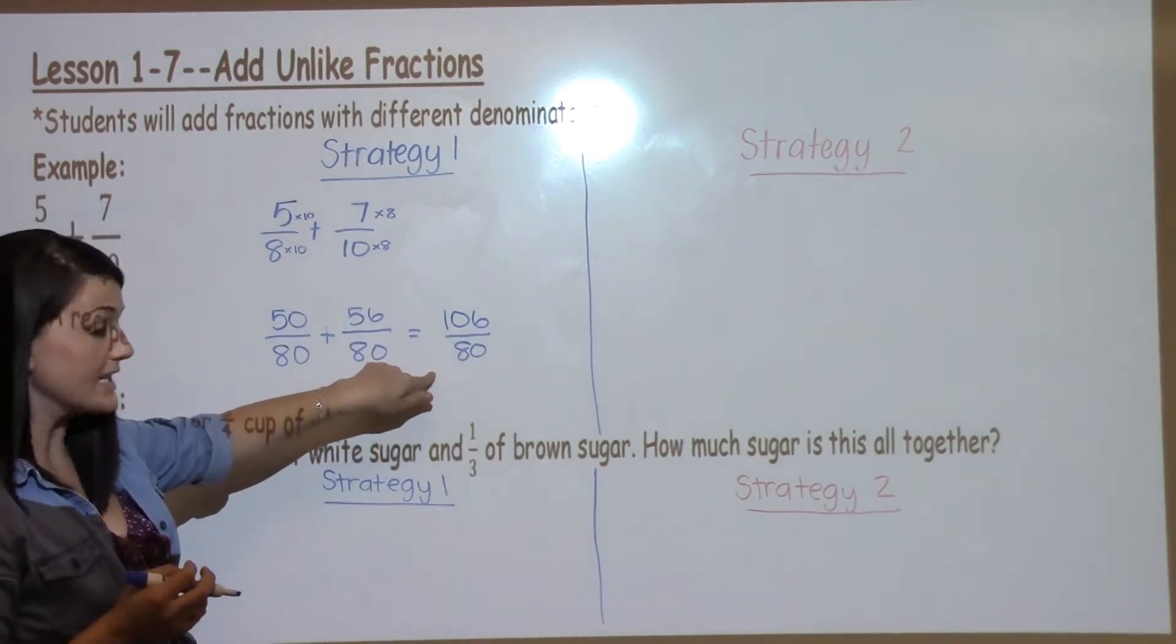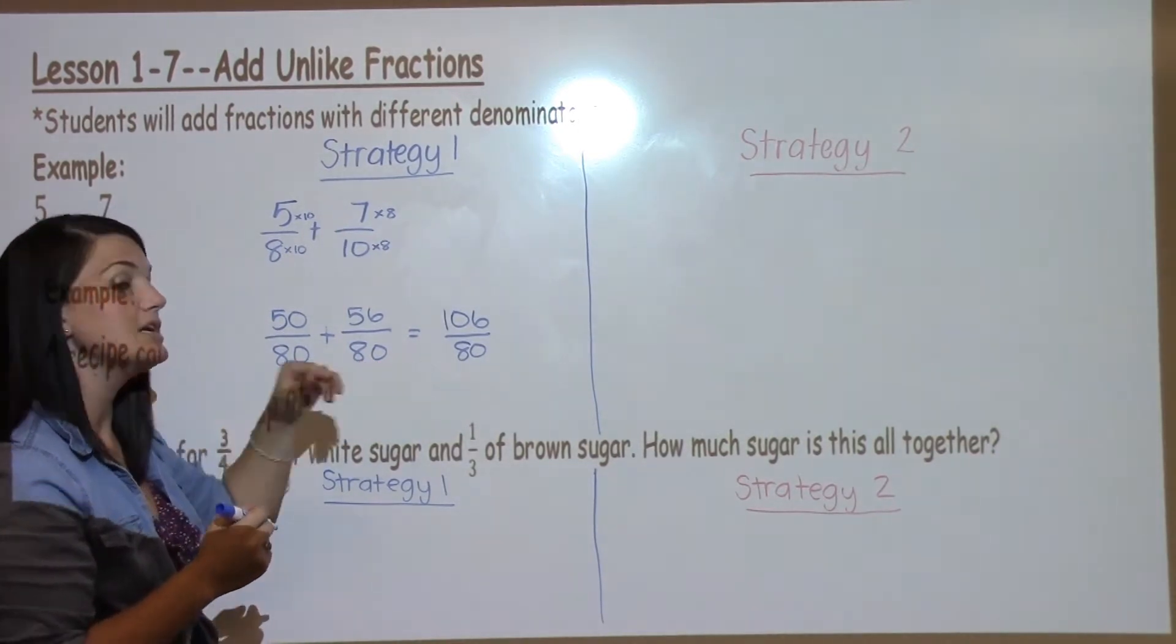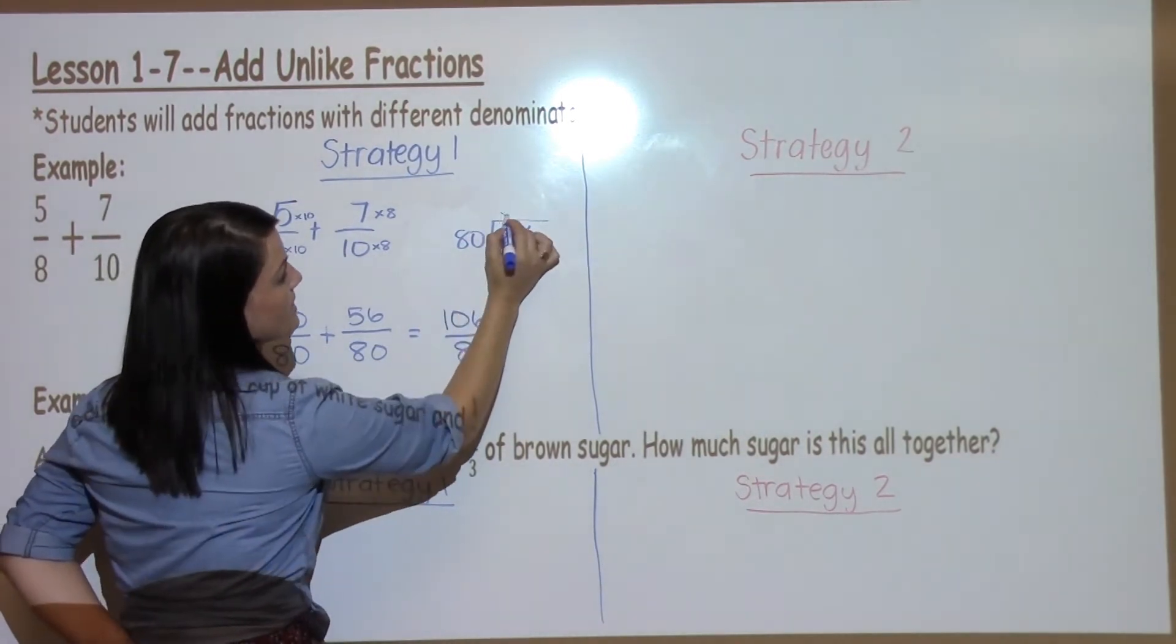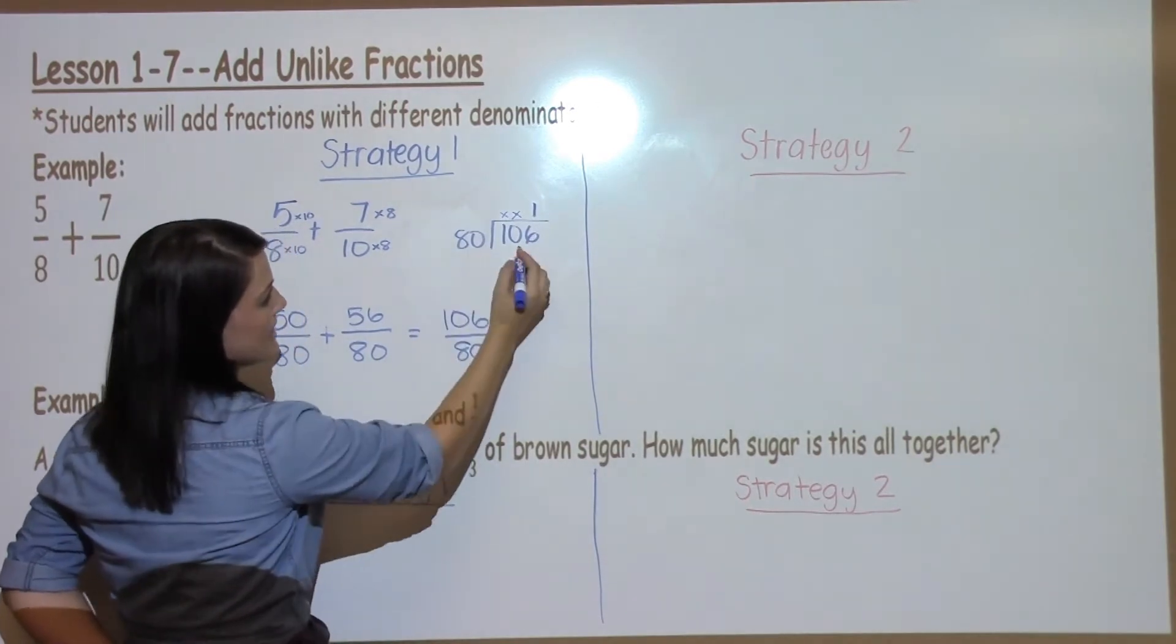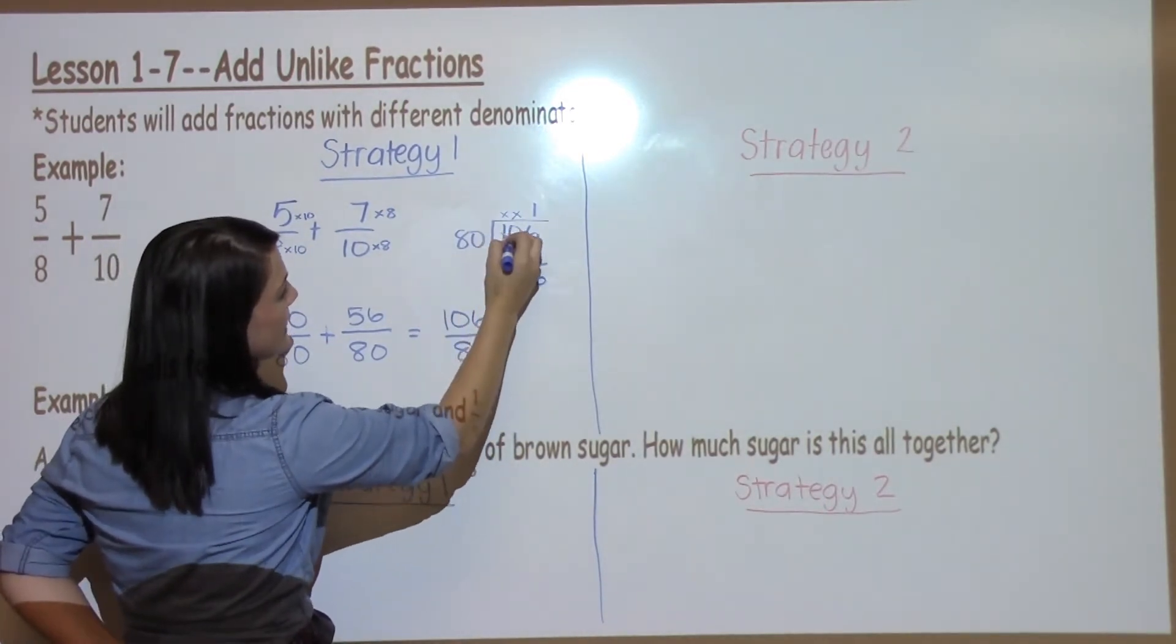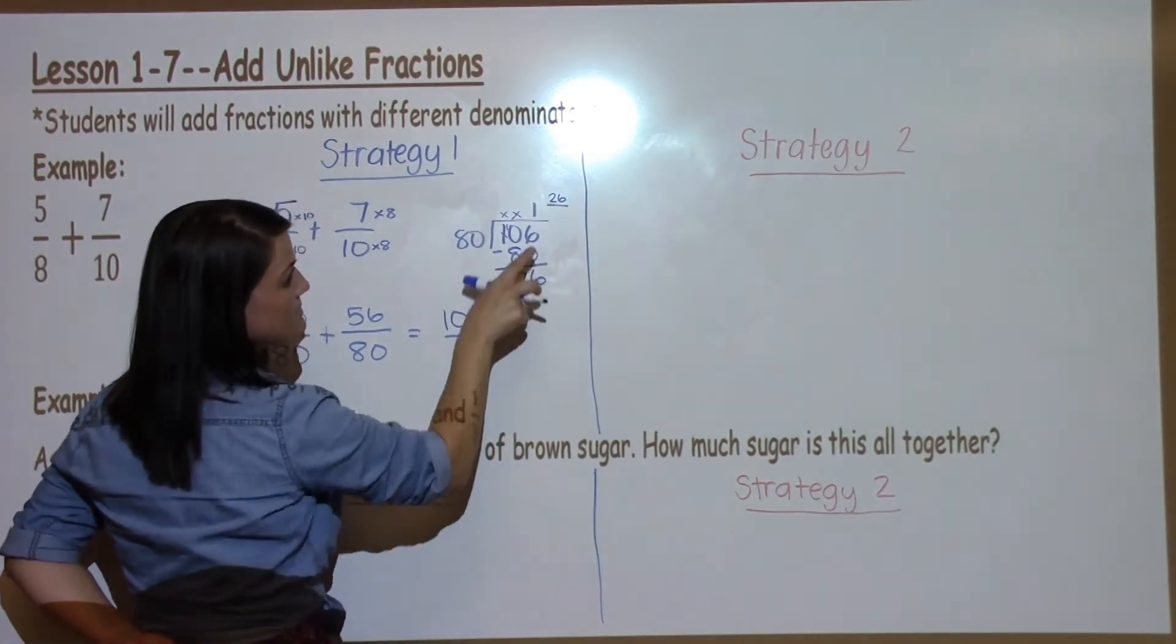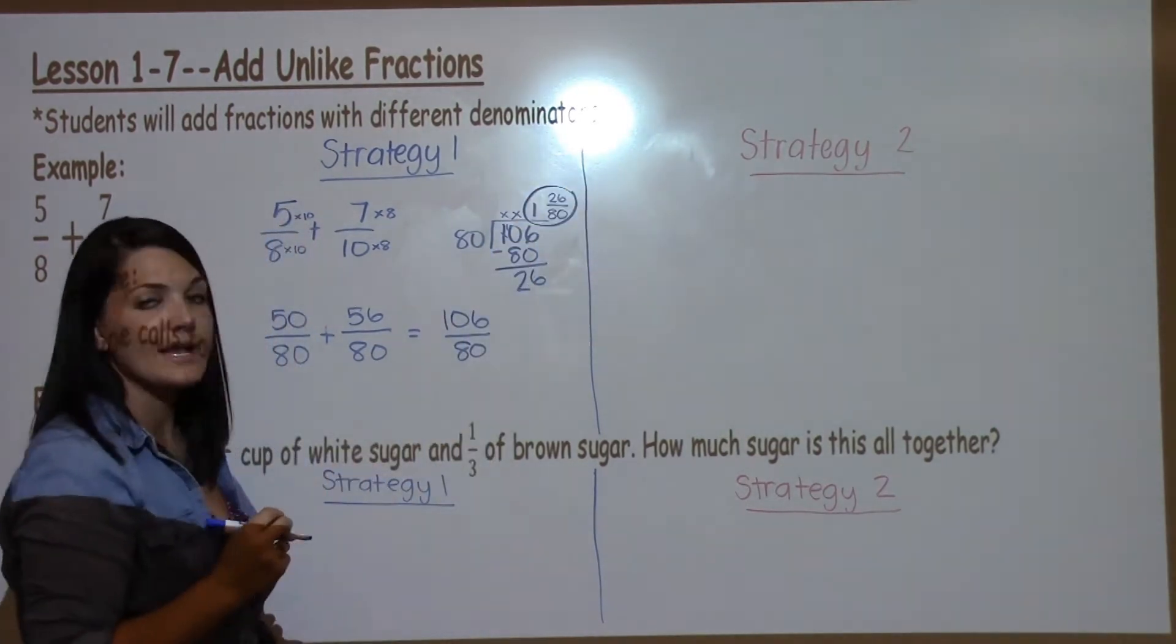This fraction should look funny to you because it's improper. In a previous lesson, we learned how to change improper fractions to make them proper by dividing the top number by the bottom number. 106 divided by 80. I know that 80 cannot go into 1 and 80 cannot go into 10, but it can go into 106 one time. 1 times 80 is 80. Then I subtract. 6 minus 0, I cannot take 0 minus 8, so I borrow the 1. 10 minus 8 is 2. There's nothing left to bring down, so 26 becomes my numerator of my remainder, and 80 becomes my denominator for a final answer of 1 and 26/80.